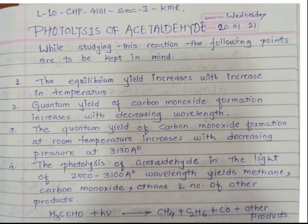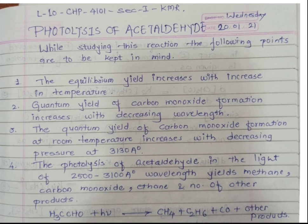While studying this type of reaction, the following points are to be kept in mind. The equilibrium yield increases with increasing temperature, because in photochemical reactions yield is very important — and yield is called quantum yield. The quantum yield of carbon monoxide formation increases with decreasing wavelength, since energy and wavelength are inversely proportional. Also, at room temperature, quantum yield of CO formation increases with decreasing pressure.